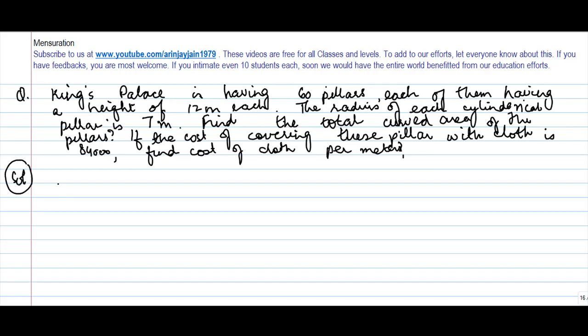So we are told that there is a King's Palace which is set up on various cylindrical pillars, and there are 60 pillars in all. The height of each pillar is 12 meters, the radius is 7 meters. We need to find the total curved area of the pillars. These pillars are cylindrical, so we know that the...